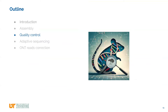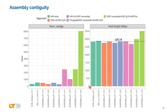We checked the quality and contiguity of all assemblies. The two best are Hi-Fi only and Hi-Fi plus uncorrected or corrected Nanopore reads, with similar contig numbers. Unfortunately, for the Nanopore-only assembly we get a higher number of contigs. There is a spike in contig number for the Nanopore-plus-trio-information assembly — something went wrong, mainly with the sex chromosome Y.